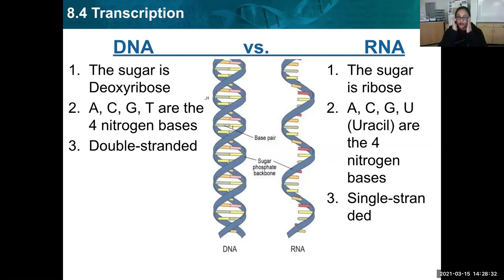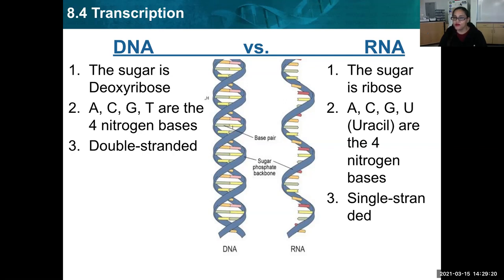DNA versus RNA: DNA, which we went over last week, has the sugar deoxyribose, the four bases A, G, C, and T, and it's double-stranded — two strands twisting around itself making a double helix. RNA, on the other hand, has three major differences: the sugar found in RNA is ribose, that's where the R comes from. Its four bases are A, C, G, and U — U stands for uracil, so you won't see T's anymore. And it is single-stranded; it doesn't have two strands wrapping around itself, just one.